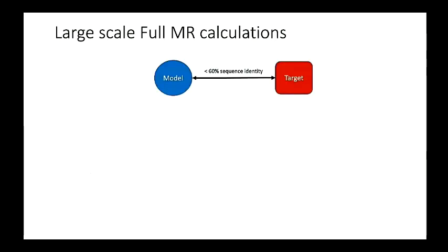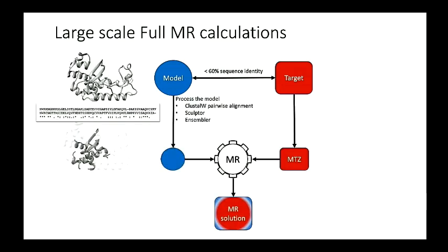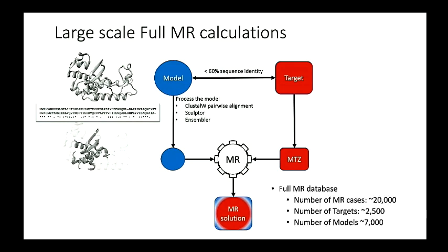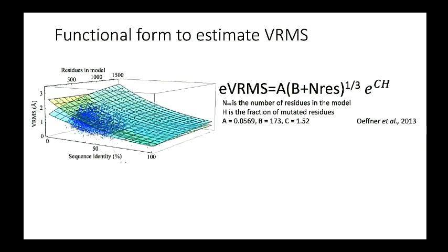My colleague Rob embarked on this journey of carrying out large numbers of MR trials, wherein he chose several targets and for each target several models. Sequences were aligned, and based on the sequence alignment the models were trimmed and prepared accordingly. Around 20,000 MR trials were carried out in his database, and from this knowledge he has come up with this form to estimate VRMS.